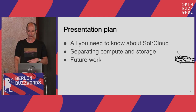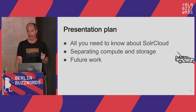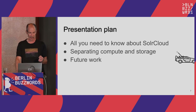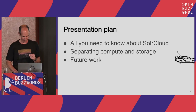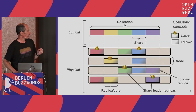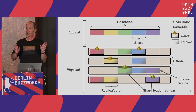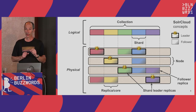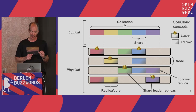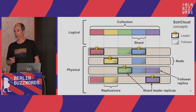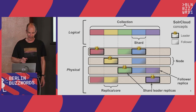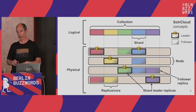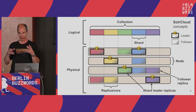All you need to know about SolrCloud — I do not assume you know anything because the terminology can be different. The thing people manipulate is a collection: you index into a collection and query a collection. A collection sometimes needs to be partitioned because it's too big, and each partition is called a shard. A shard is a logical concept — it's not something you can find on disk. On disk you find replicas.